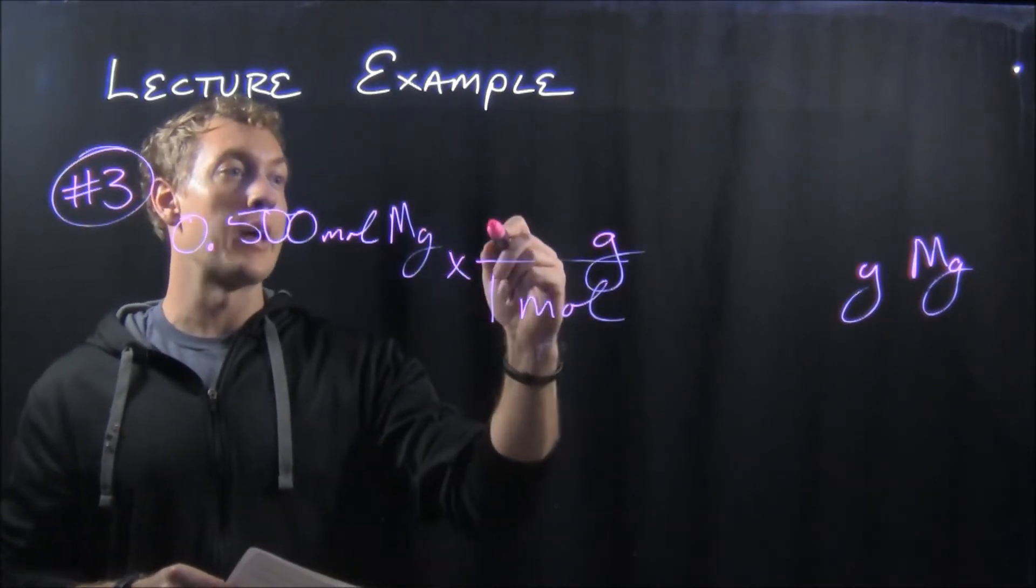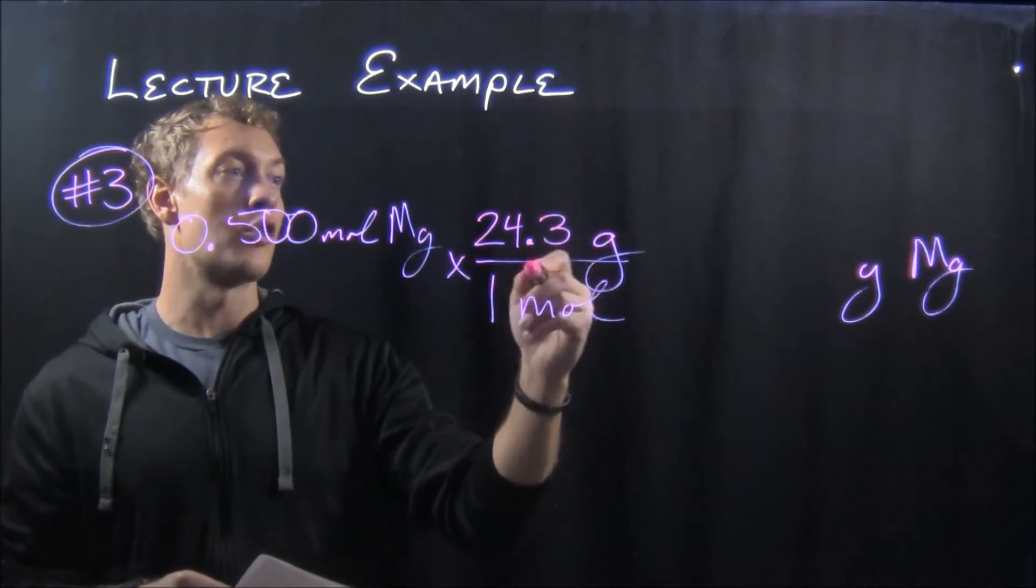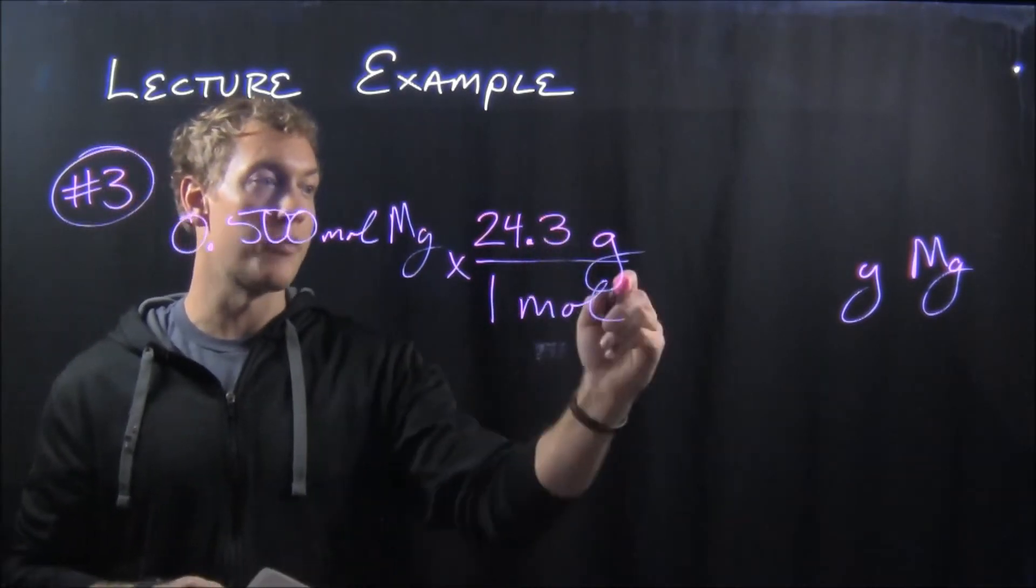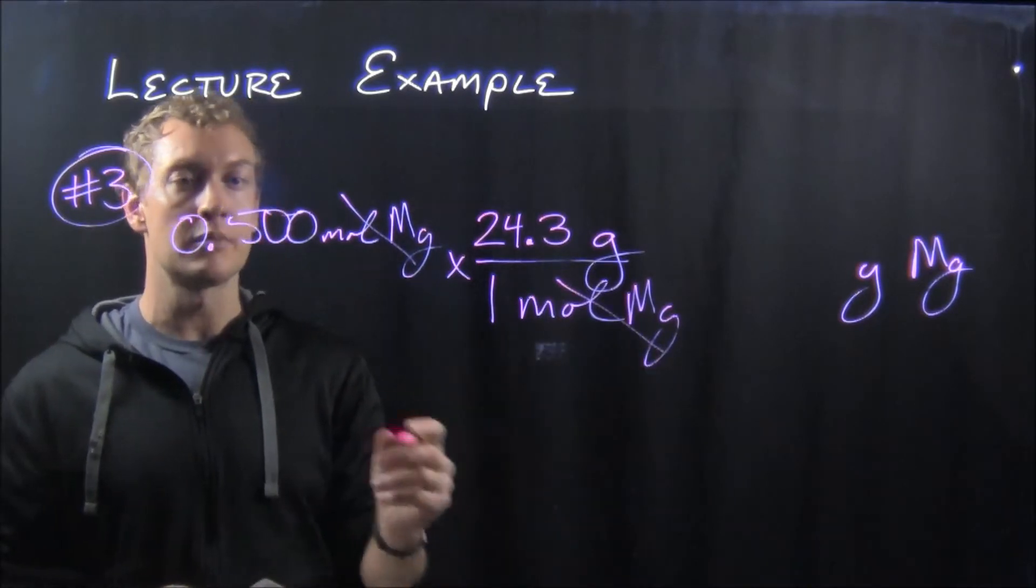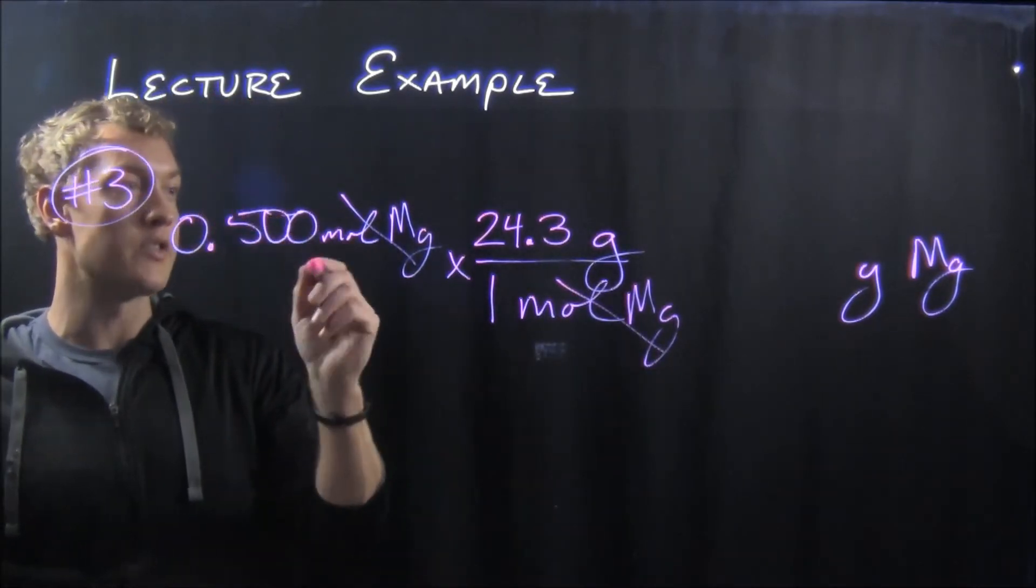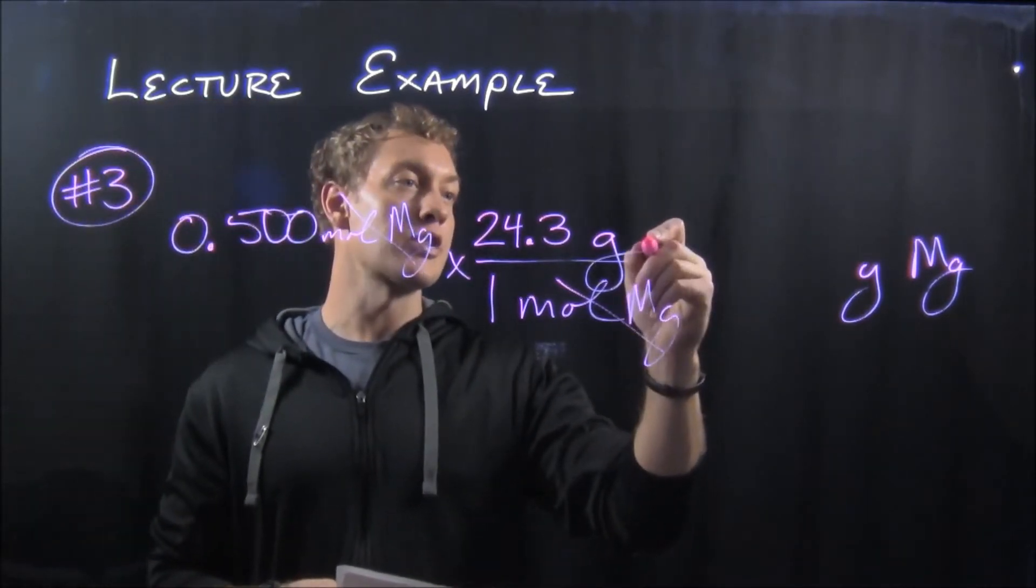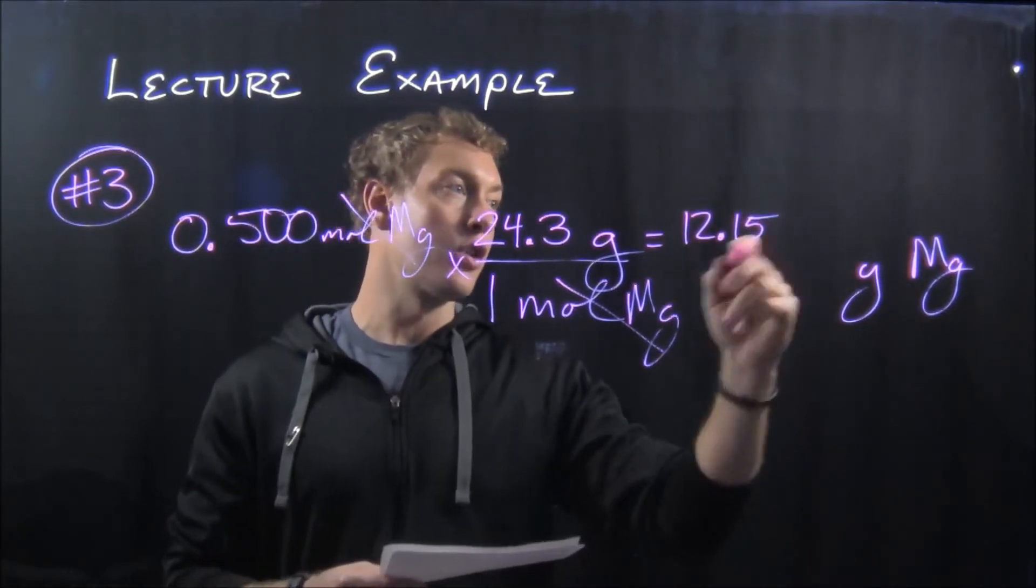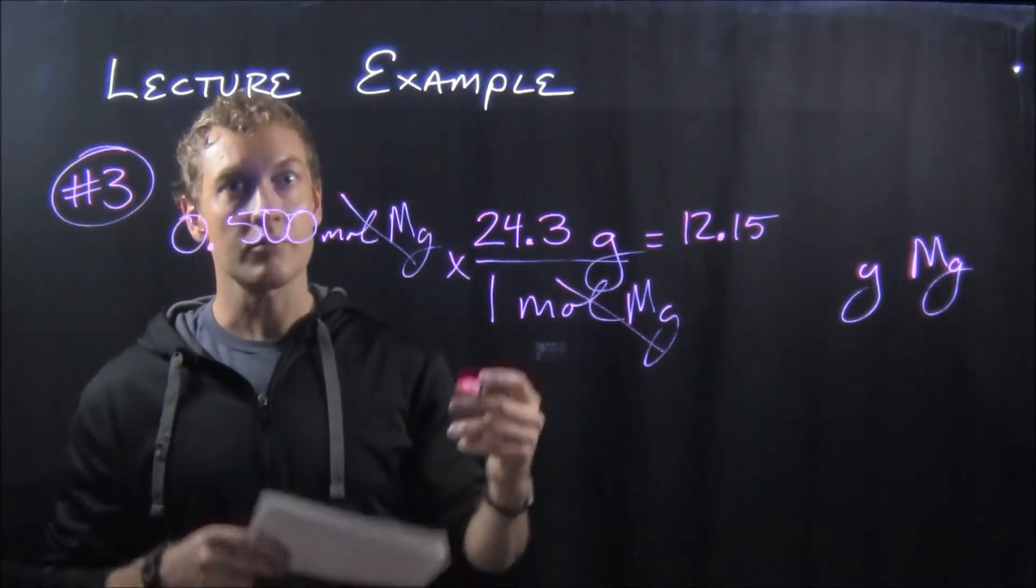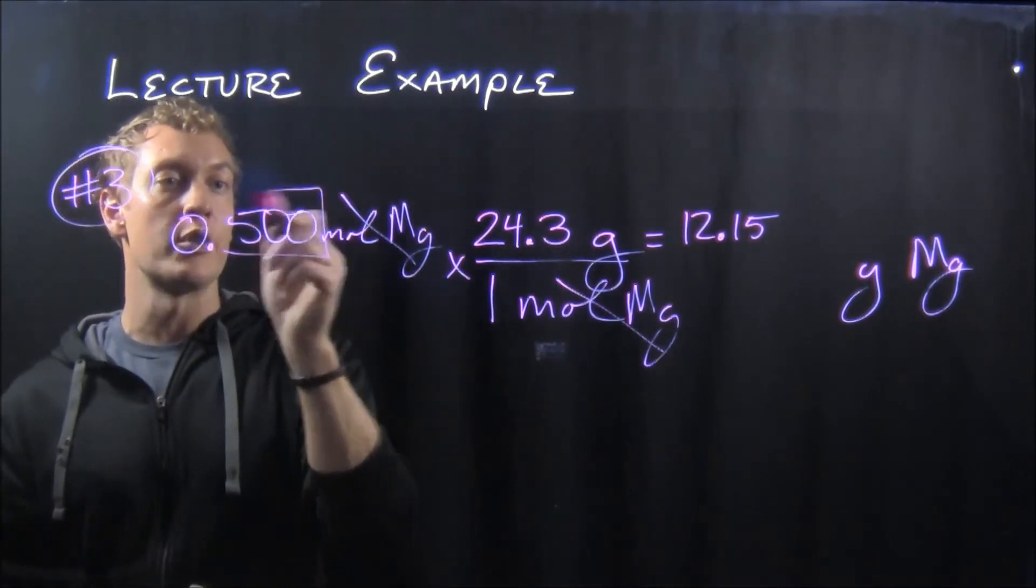...at the periodic table, and for magnesium it's 24.3 grams per mole of magnesium. So moles of magnesium will divide away and you'll have 0.500 times 24.3. When you punch that in your calculator, it's actually going to come out to be 12.15 grams of magnesium.